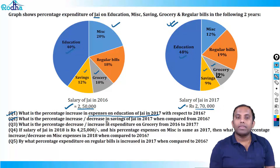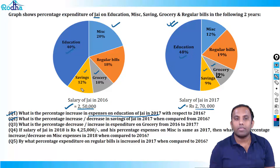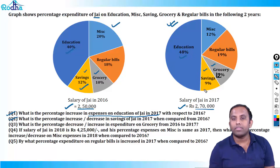For savings, J's saving in 2016 is 12% of 2,50,000, and J's saving in 2017 is 9% of 2,70,000.